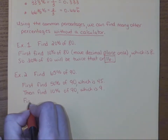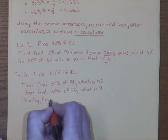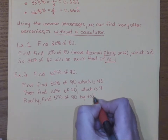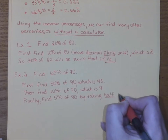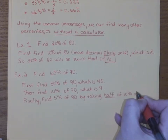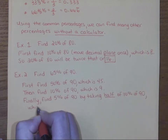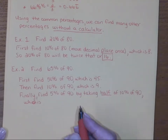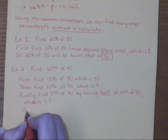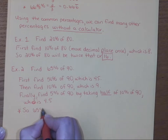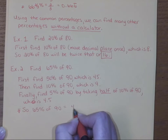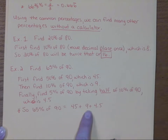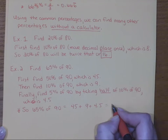Lastly, we need to find 5%. Just like 20% is double the 10%, we could say 5% is half of 10%. So we find 5% by taking half of 10% of 90. Half of nine — because 10% represents nine — is four and a half. So in the end: 65% of 90 equals 50% of 90 plus 10% of 90 plus 5% of 90. That's 45 plus 9 plus 4.5, which equals 58.5.